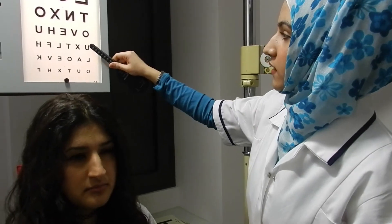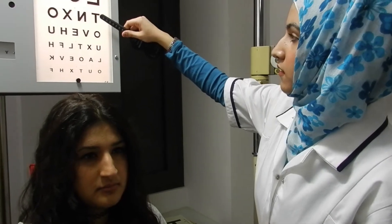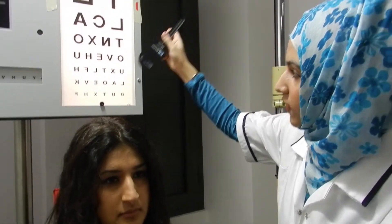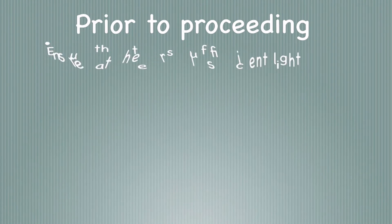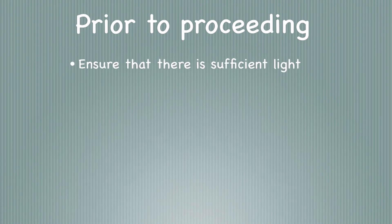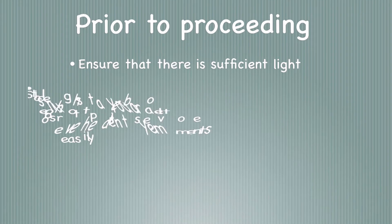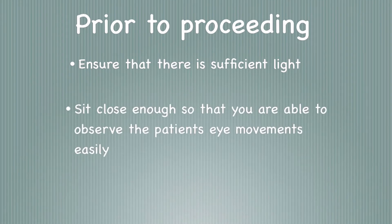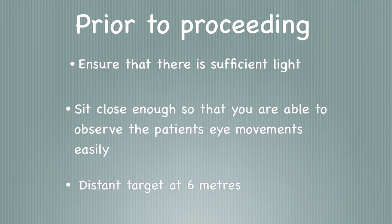If you can look at the letter T for me — look at the bottom of the T. Prior to proceeding, ensure there is sufficient light in the room so the examiner can clearly see the patient's eyes. Sit approximately 30cm away from the patient to ensure you are able to observe their eye movement. For the distance cover test, make sure the target is at 6 metres.